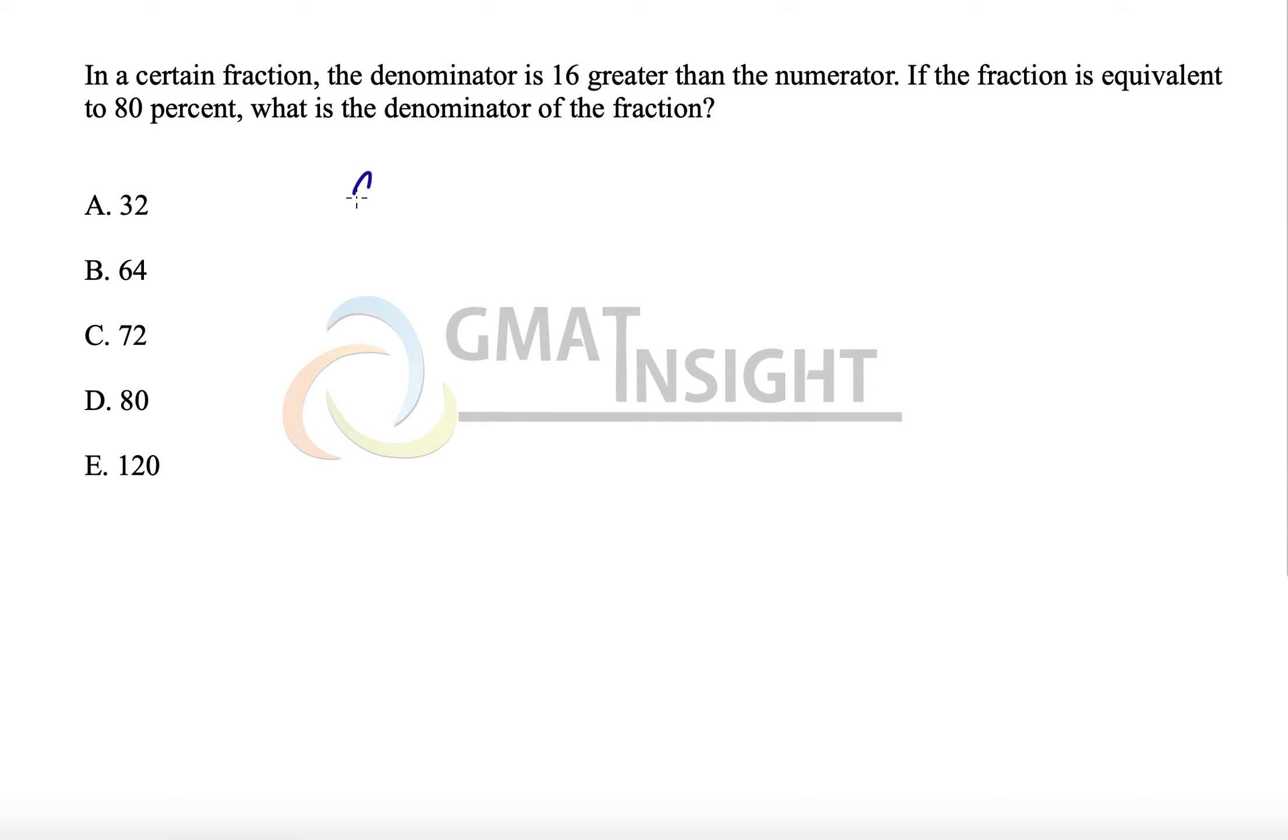In a certain fraction, let's assume that the fraction is a over b, the denominator is 16 greater than the numerator. So this fraction becomes a divided by a plus 16, where a is the numerator and a plus 16 is the denominator.